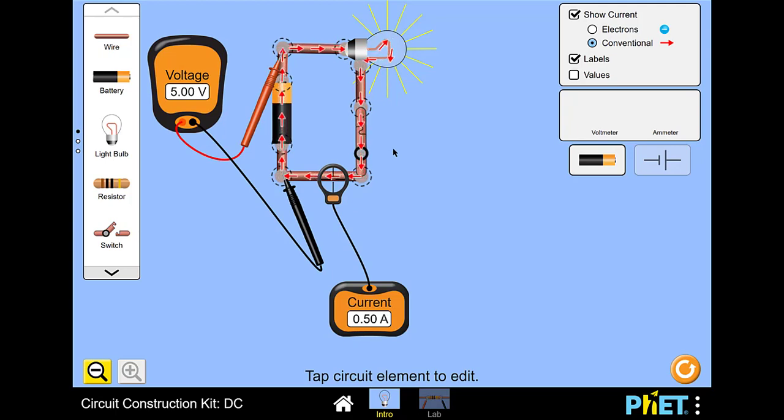The lamp acts as a resistor, converting electrical energy into heat and light energy. We can calculate the resistance value of the lamp using Ohm's law as the voltage divided by the current, or 5 volts divided by half an amp, which is 10 ohms.